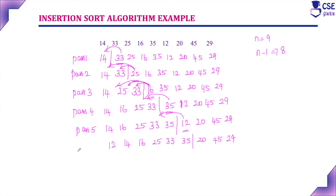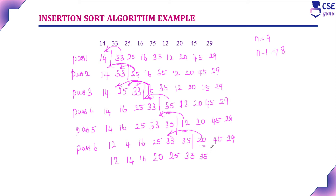Now implement pass 6. Consider one element from the unsorted list and compare it with all elements in the sorted list. 12, 14, and 16 are all smaller compared to 20. When comparing 25 and 20, 20 is smaller, so it occupies that position. Then comes 25, 33, and 35. Now only two elements remain in the unsorted list.